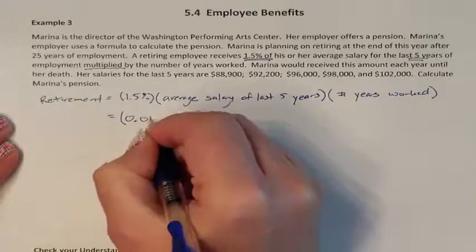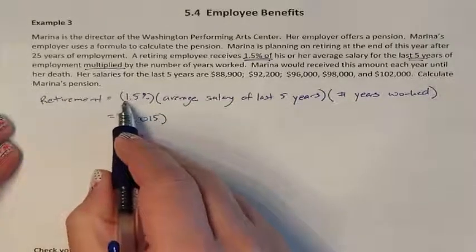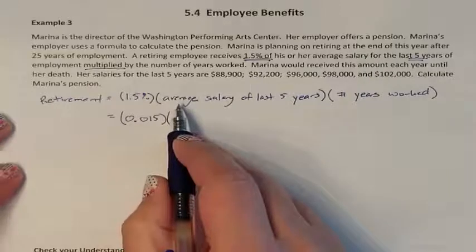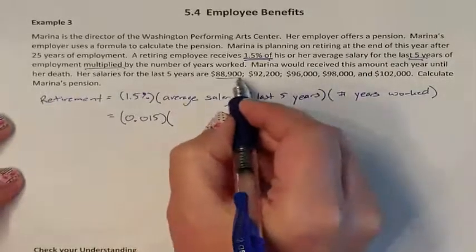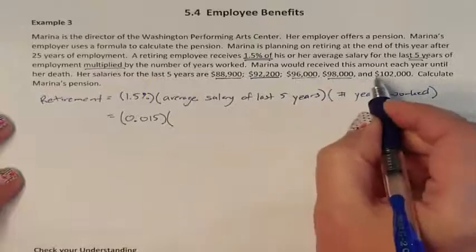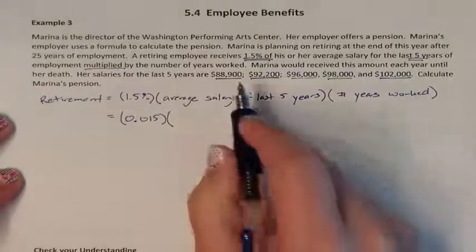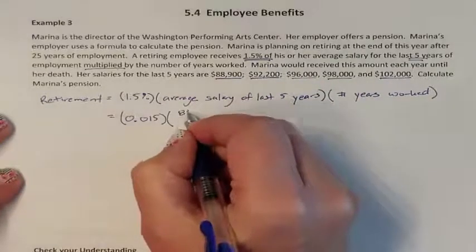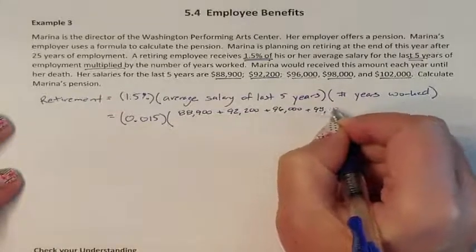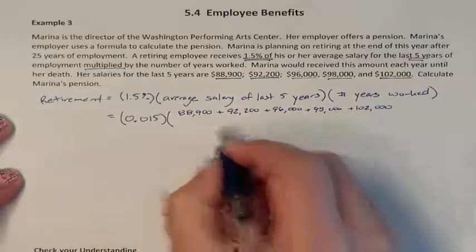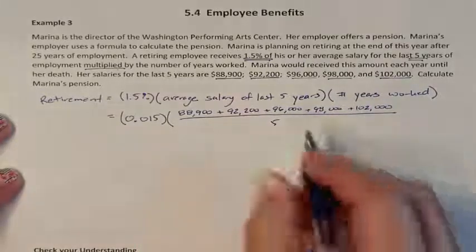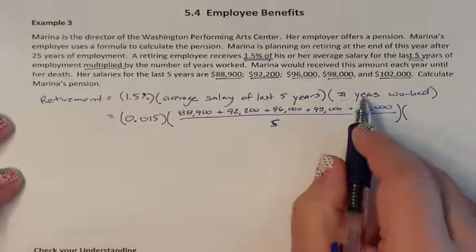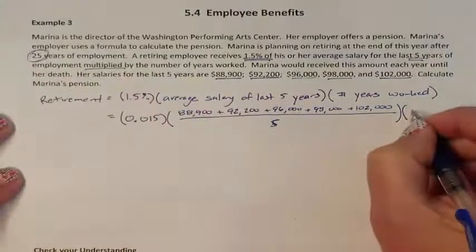1.5% is 0.015 as a decimal, because you take the decimal point and move it two places to the left. We need the average of her salary for the last 5 years. They don't tell us her average directly, but they tell us what her last 5 years were. Remember, average means add them all up and divide by 5. So we add all 5 years of salary up, divide by 5 to find the average. That gets multiplied by the number of years worked, which is 25.